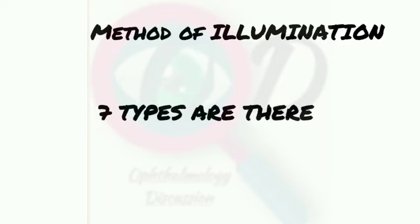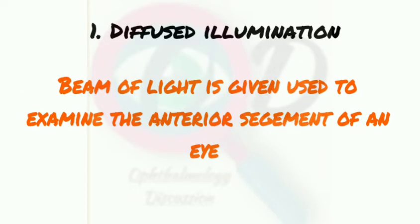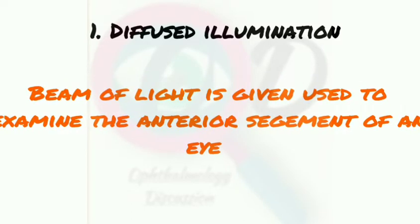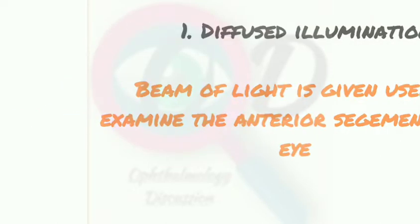The first illumination is diffused illumination. Diffused illumination is a beam of light used to examine the anterior segment of the eye. We use diffused illumination for the examination of the anterior segment of the eye — that is, the front part.